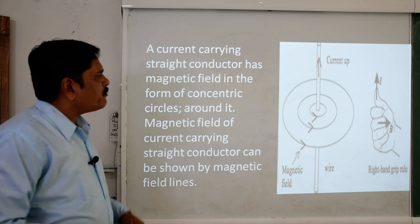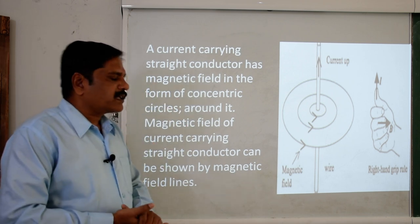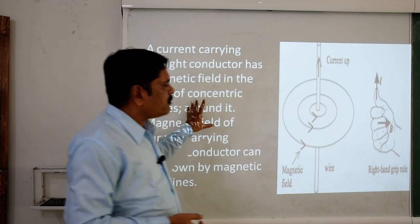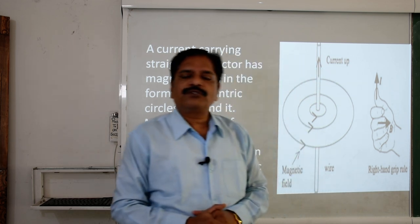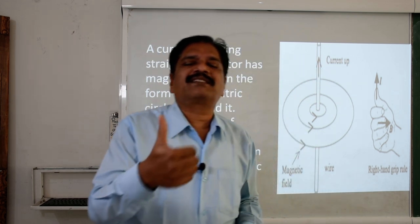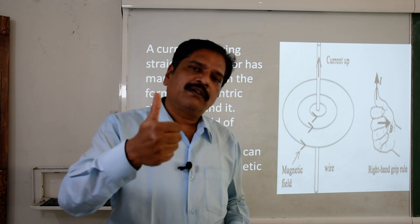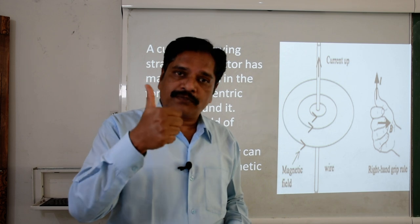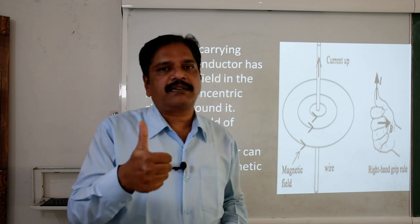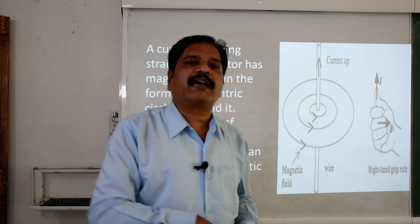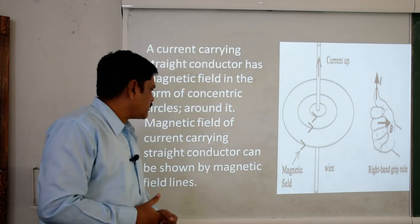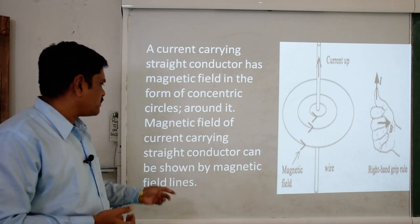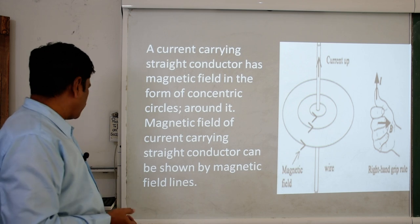This shows how electric current is responsible for developing a magnetic field around it. To know the direction of the magnetic field around it, apply the right-hand thumb rule: place your right hand around the conductor in the direction of the electric current with the thumb, and the curling of the fingers will give you the direction of the magnetic field lines. The magnetic field of the current-carrying straight conductor can be shown by these magnetic field lines.